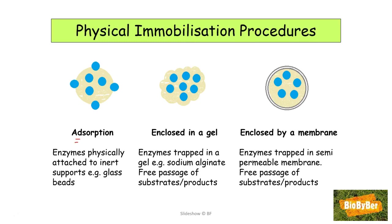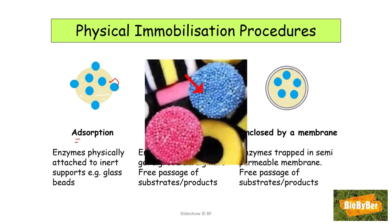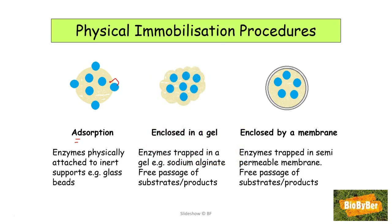In adsorption, the enzymes are physically attached to inert supports — physically attached to a glass bead, for example. The enzymes can also be enclosed in a gel: they are trapped in a jelly-like material, perhaps sodium alginate, which is obtained from seaweeds. The gel or the sodium alginate will allow the reactants — what the enzyme is going to act upon — to enter the jelly, and the jelly will allow the product — what you are making — to leave.